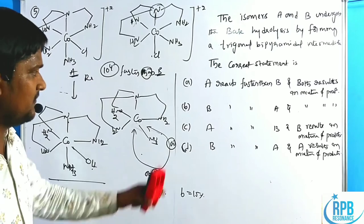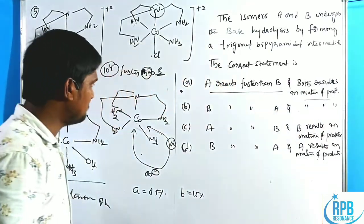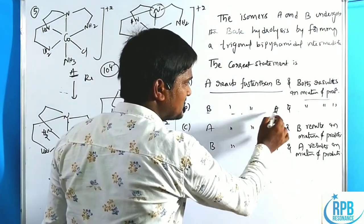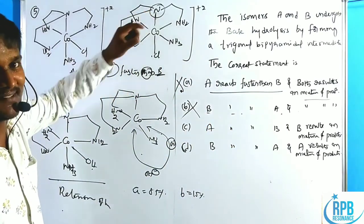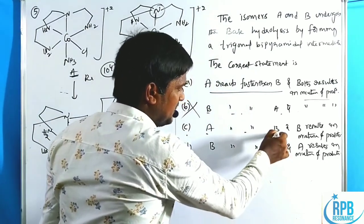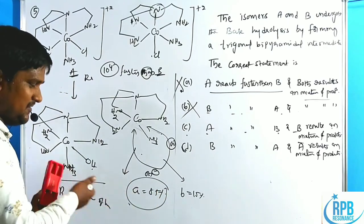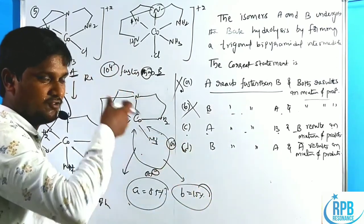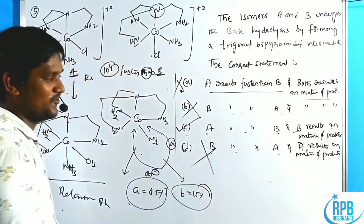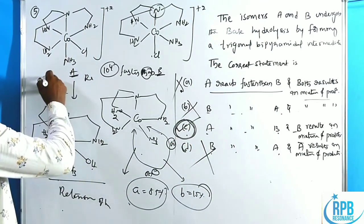Reviewing the options: Option A — A reacts faster than B, both give mixture: wrong, because A gives only retention (single product). Option B — B reacts faster than A: wrong, since there is no trans proton in B giving lesser reactivity. Option C — A reacts faster than B, and B gives mixture of products: A reacts faster (correct), and B gives 85% one product + 15% another isomer, i.e., a mixture (correct). So C is the correct answer. Option D — B faster than A, A gives mixture: wrong. Option C is correct. This is the December 2018 four-marker question.